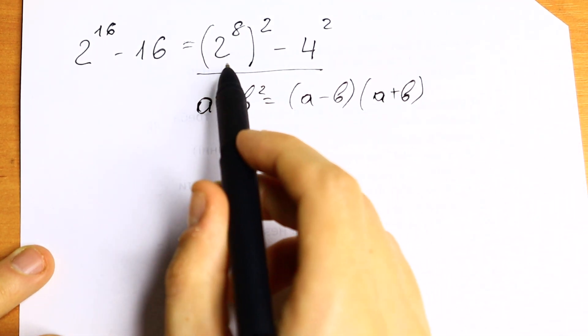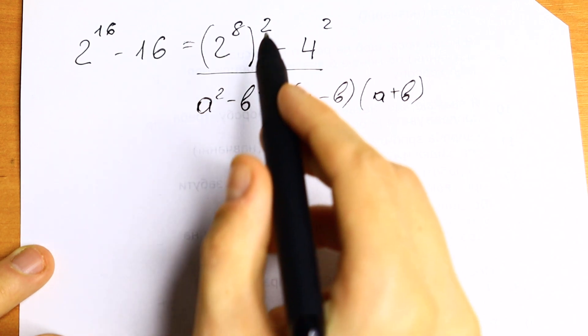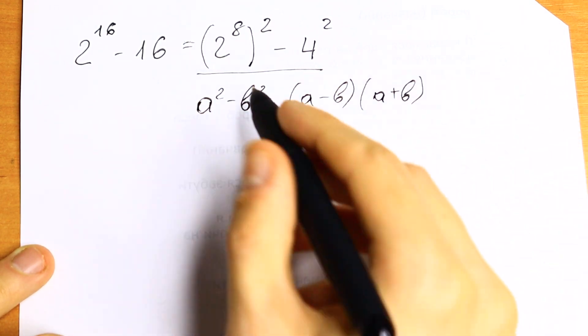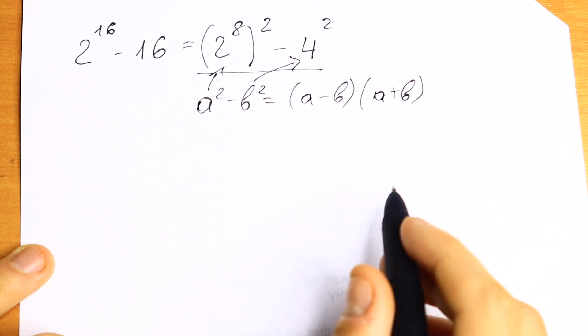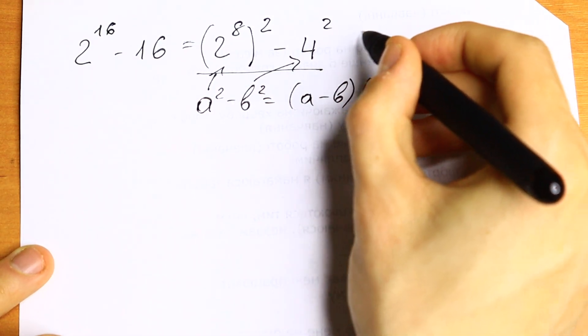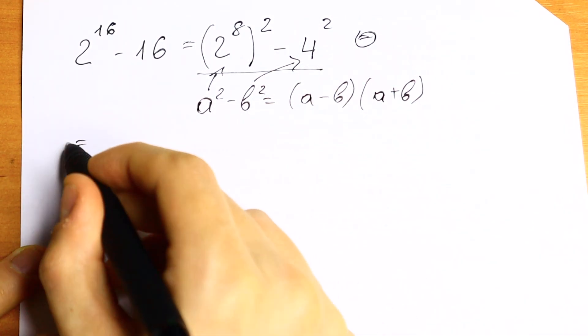If we know this formula, we can write this easily using this formula. So this is our a and this is our b, so we can use this formula. What we will have? As a result, we will have an interesting case.